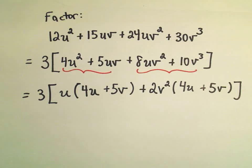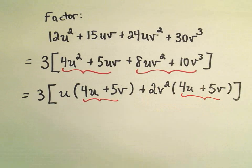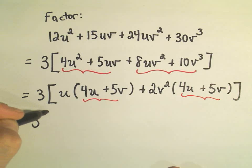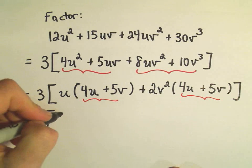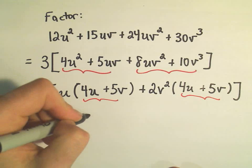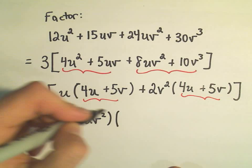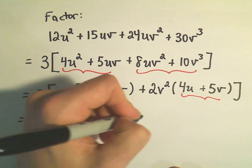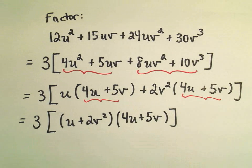So at this point, we've got this case where we've got the same thing in parentheses. And remember the trick on these is, 3 is still hanging out front, we just take the stuff out front—the u and the positive 2v²—we'll stick that in one set of parentheses. And then we put our common factor, the 4u plus 5v, in the other set of parentheses. And now we're done, we have completely factored this original expression.